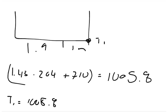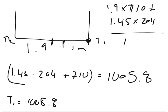We've got to add T1 and T2 in order to get the sum of the torques. So T2 would be 1.9 times 710 plus 204 times 1.45. That equals 1,715 newton meters.